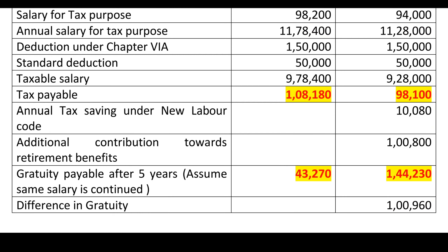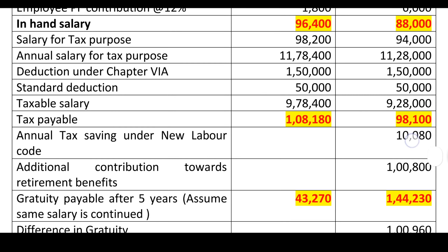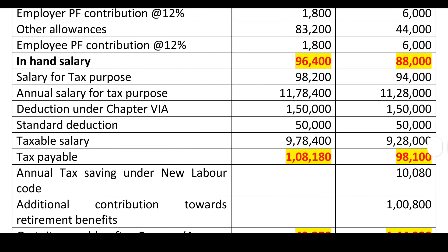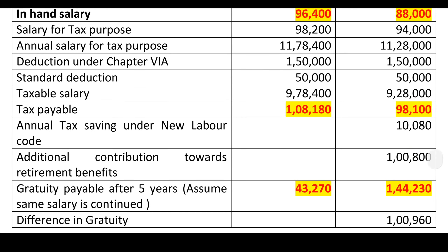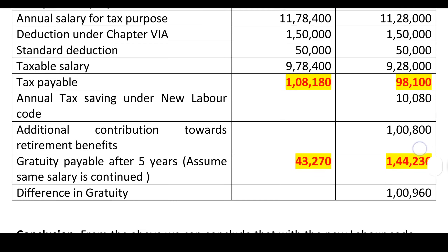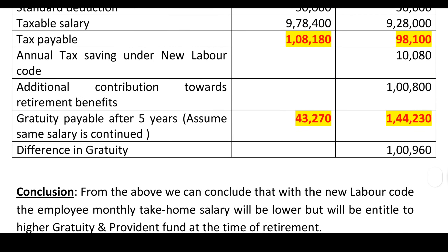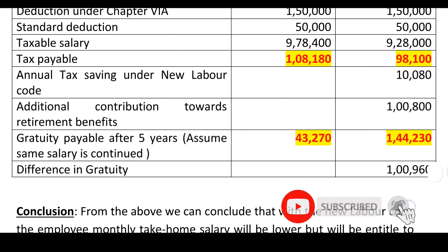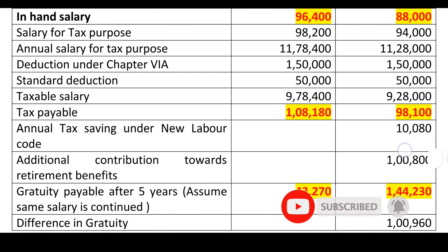So we can conclude that temporarily we are taking a lesser amount in terms of take-home salary monthly, but we will receive a bulk amount in the future in terms of gratuity and PF. Thank you very much. For more interesting updates, please watch my channel and subscribe.